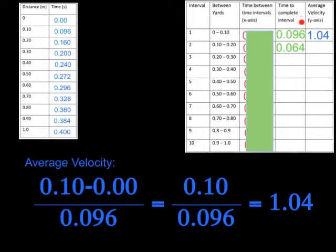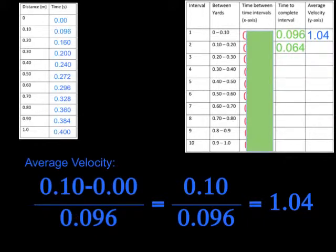Now let's find the average velocity. I take the distance traveled — from 0 to 0.1 meters, that's 0.1 minus 0, which is 0.1 — and divide by the time it took, which is 0.096. That gives me 1.04 meters per second, which goes into that box. I'll do one more example and then you're on your own.